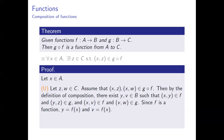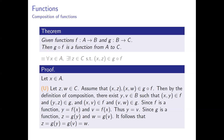Since f is a function, this means that y equals f(x) and v equals f(x). Thus, y equals v. Also, since g is a function, z equals g(y) and w equals g(v). Since y equals v, we have g(y) equals g(v). So z equals g(y) equals g(v) equals w. Therefore, z equals w, which proves uniqueness. This completes the proof that the composite relation gf is a function from A to C.